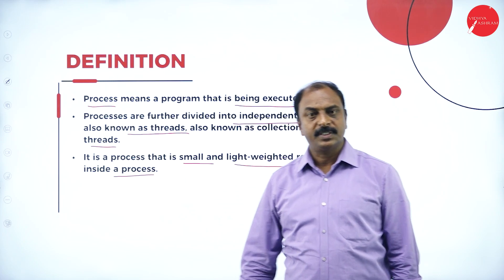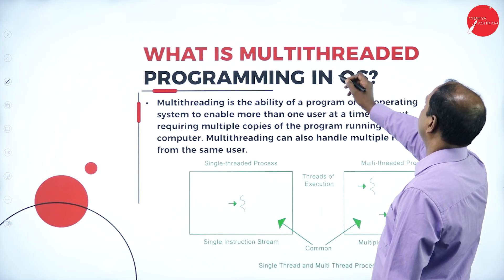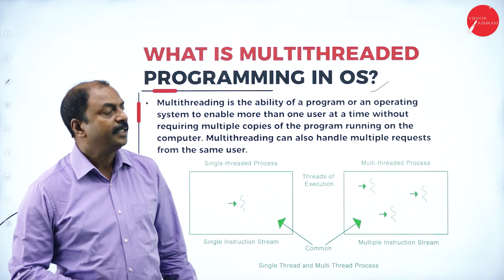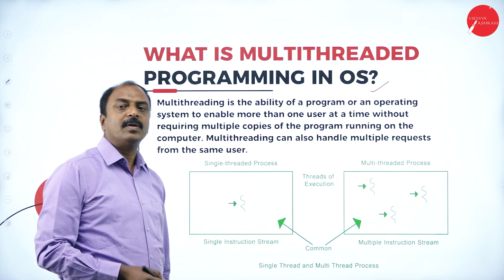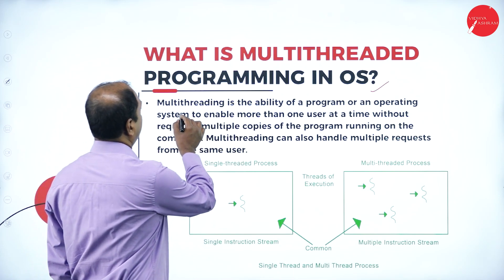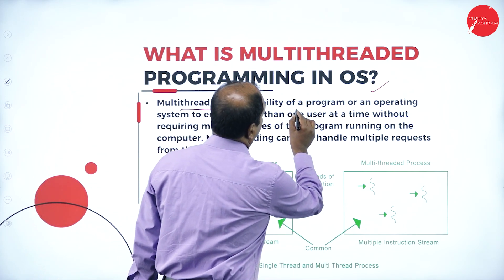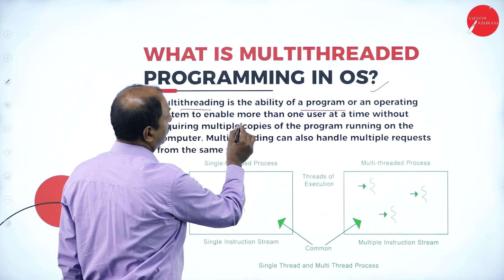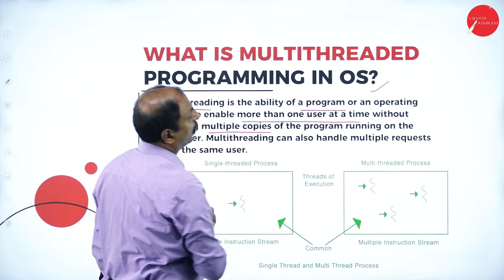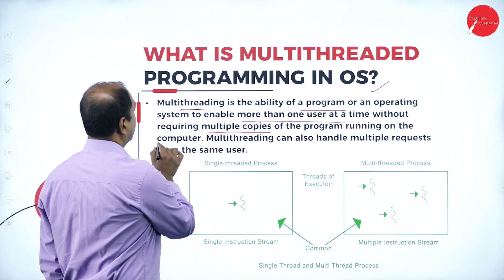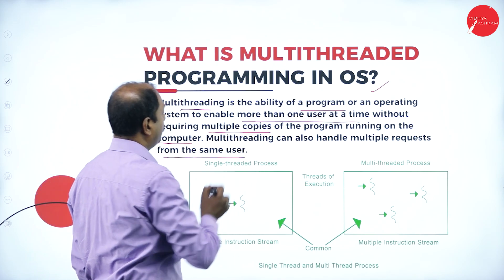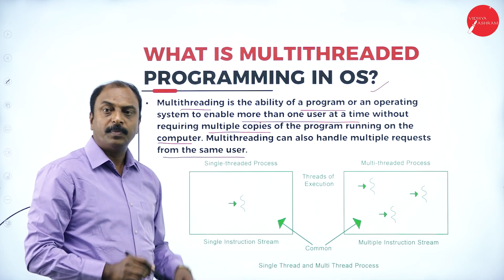Next, what is multi-thread programming in an operating system? Each and every process can have a number of threads. Multi-threading is the ability of a program or an operating system to enable more than one user at a time without requiring multiple copies of the program running on the computer. Multi-threading can also handle multiple requests from the same user.